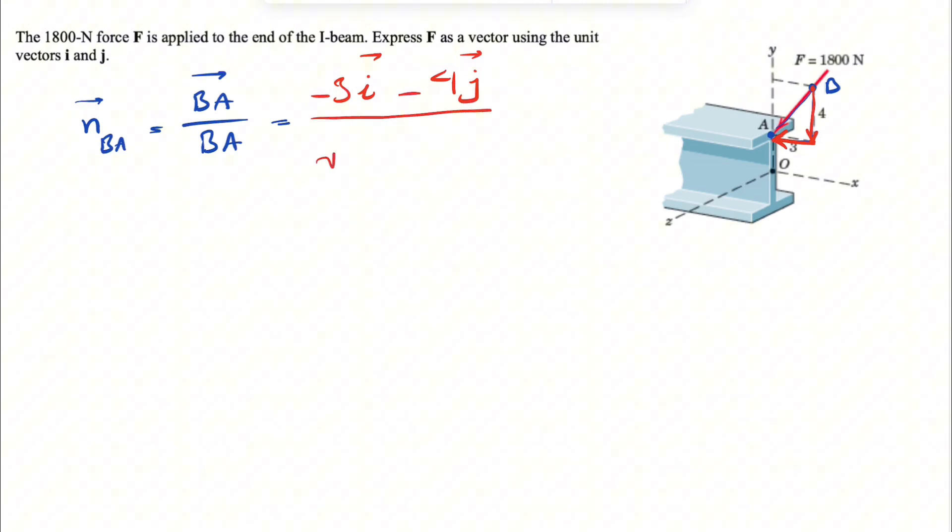Once we have the numerator, the denominator is pretty easy. We have the square root of minus 3 squared plus minus 4 squared, and we know the denominator would be the square root of 9 plus 16, which is 25, so this will be 5. Our unit vector in here, which is what the question is asking, each of them divided by 5, so minus 3 over 5i, minus 4 over 5j.